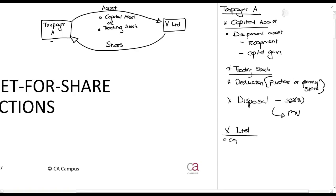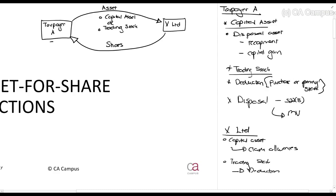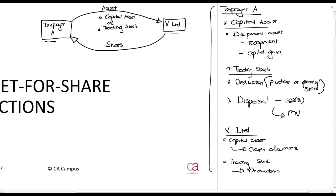For X Limited: if it's a capital asset, they will claim allowances; if it's trading stock, they will claim a deduction, and closing stock will be added back, or if sold, it's gross income. These are the normal rules. In an exam, if they tell you Taxpayer A gives an asset to X Limited and gets shares in return and they've agreed in writing that corporate rules do not apply, you apply these normal rules — this is what you get asked most often.